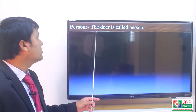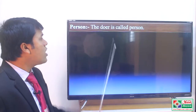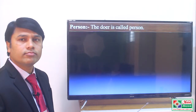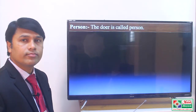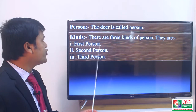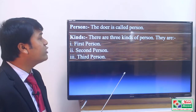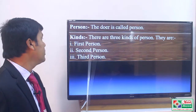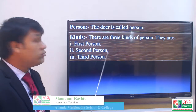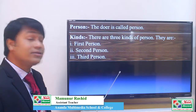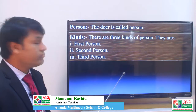Person. The doer is called person. There are three kinds of person. They are first person, second person and third person.